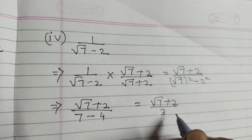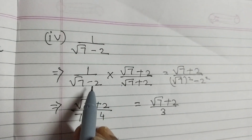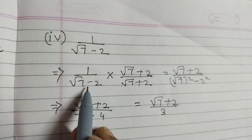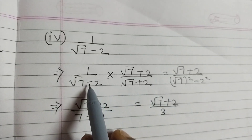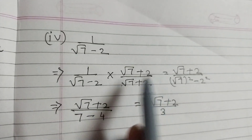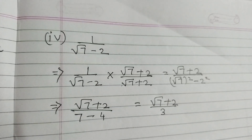All you need to do is take the same expression and multiply it with the opposite sign: if minus is there, multiply by plus; if plus is there, multiply by minus. Then use the identity A plus B into A minus B equals A squared minus B squared. That's all for now — see you in the next video.